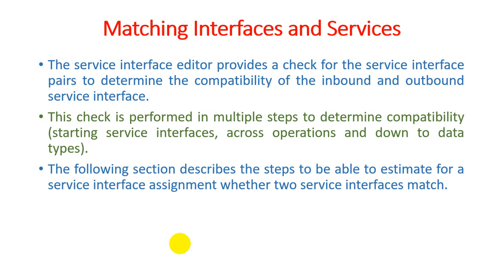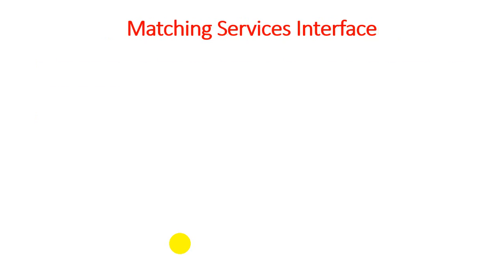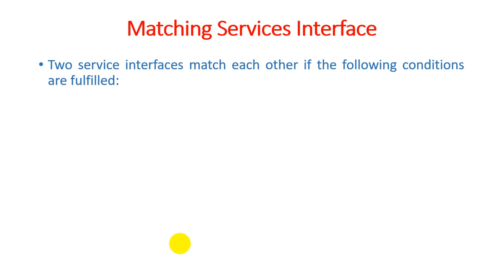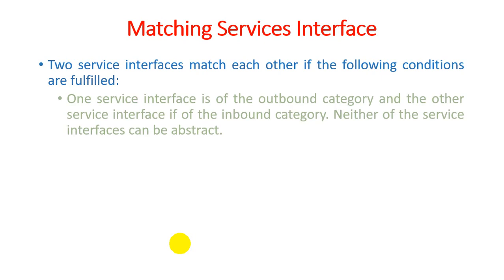The following sections describe steps to estimate whether two service interfaces match. Two service interfaces match each other if the following conditions are fulfilled. First: one service interface must be of the outbound category and the other must be of the inbound category, and neither of the service interfaces can be abstract. So for the compatibility check, one service must be outbound and the other inbound.